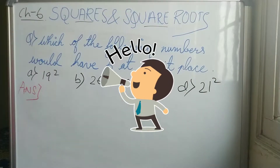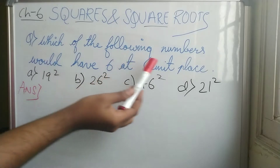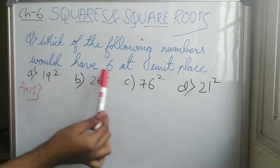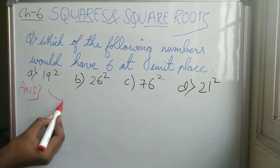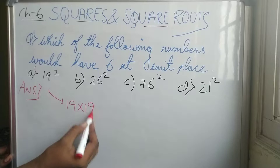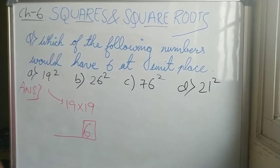We have a simple question to solve. We are given some numbers and asked which of them would have 6 at the unit place — that means you have to identify whether the unit place contains 6. Looking at the first one, 19 squared means 19 into 19. When we do that multiplication, we check if the answer has 6 as the unit place.